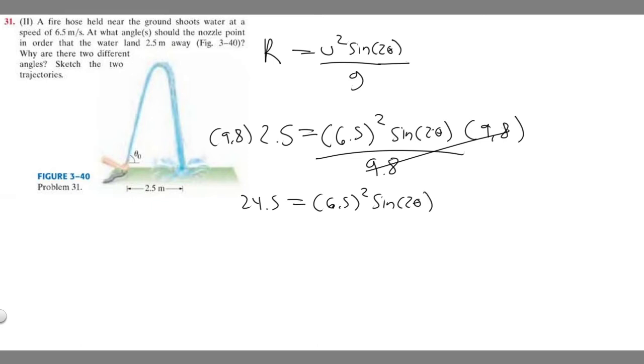So now what we want to do is get this 6.5 out of here. So divide both sides by it. 6.5 squared is 42.25. And so divide both sides by that.